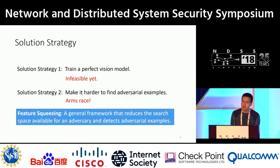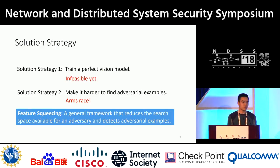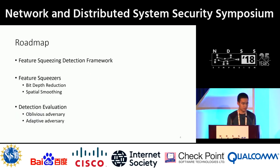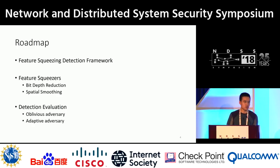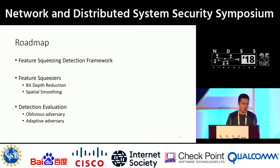In this work, we propose to change the game with feature squeezing, which is a general framework that reduces the search space available to an adversary and detects adversarial examples. In this talk, I will introduce the general framework of feature squeezing, followed by the two feature squeezers we have explored in our paper, and we evaluate the detection performance on two different threat models: the oblivious adversary and the adaptive adversary.